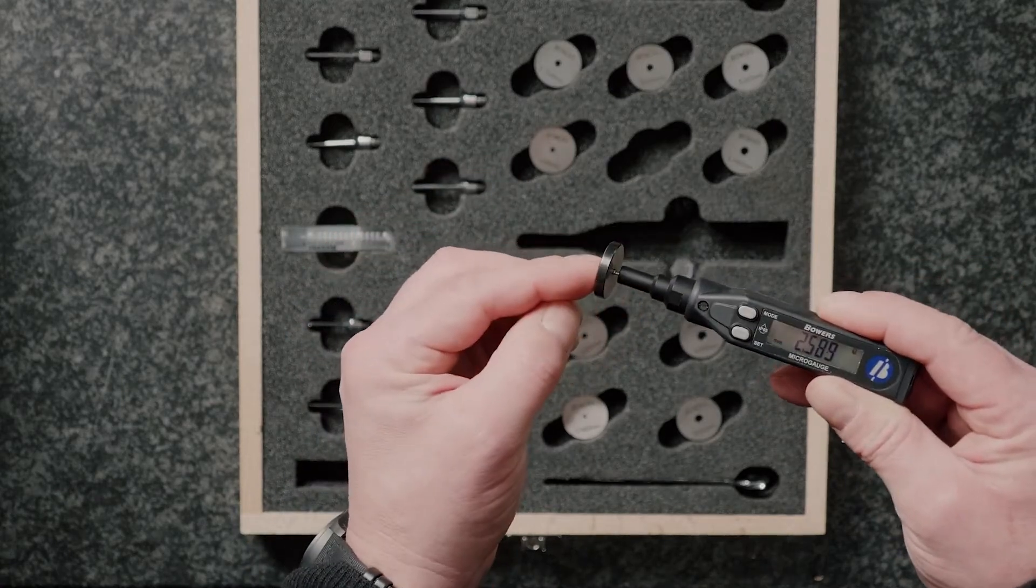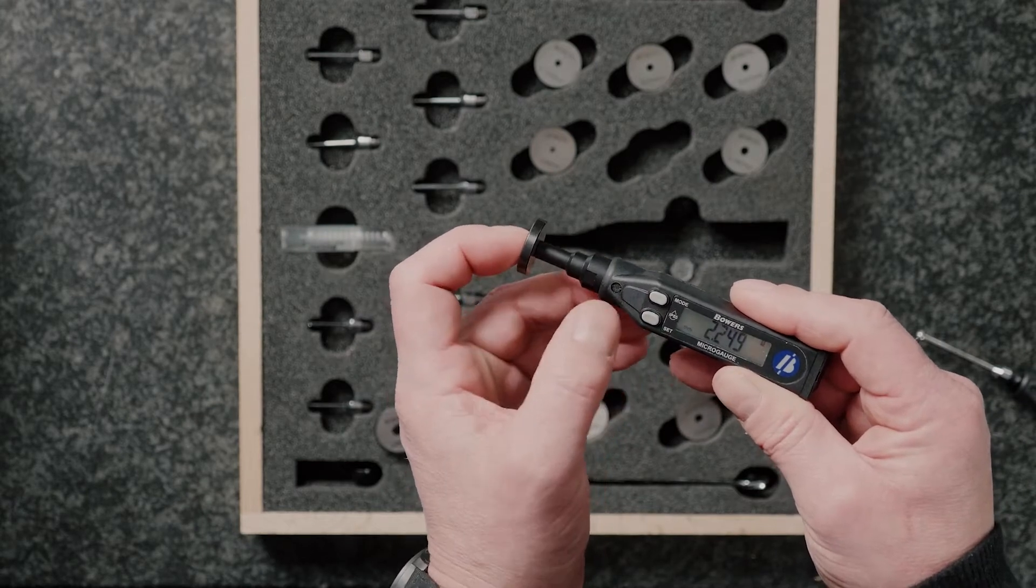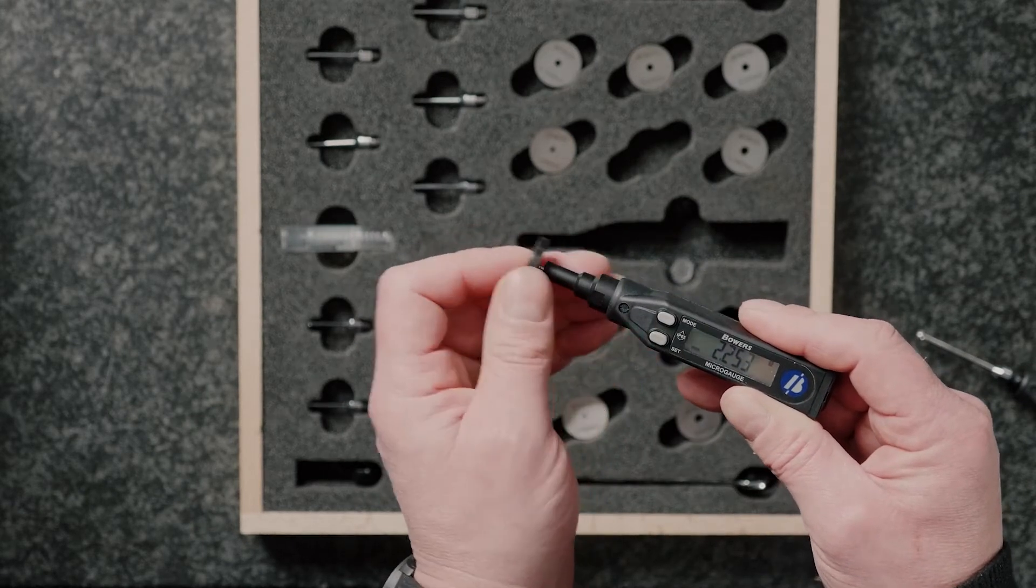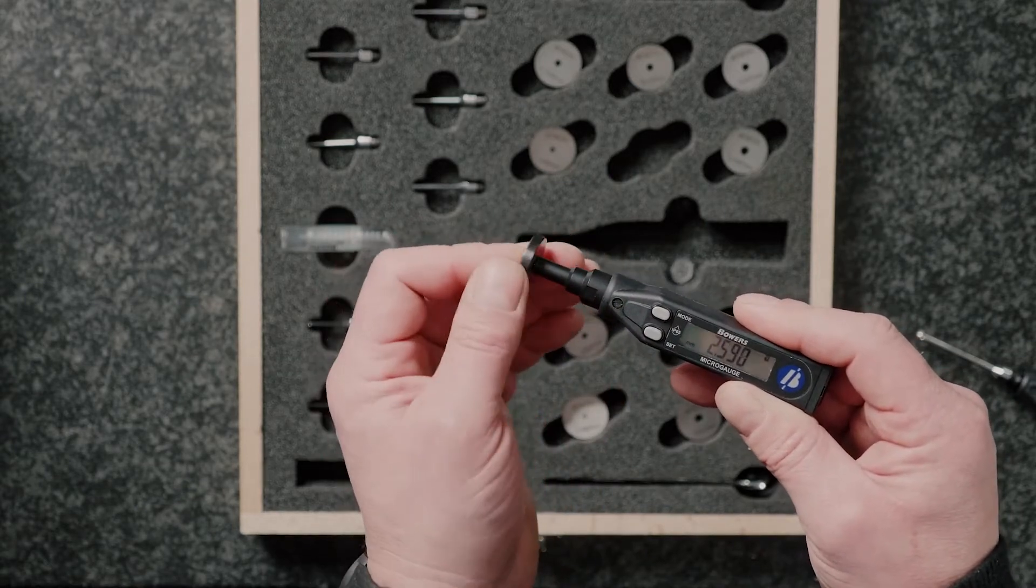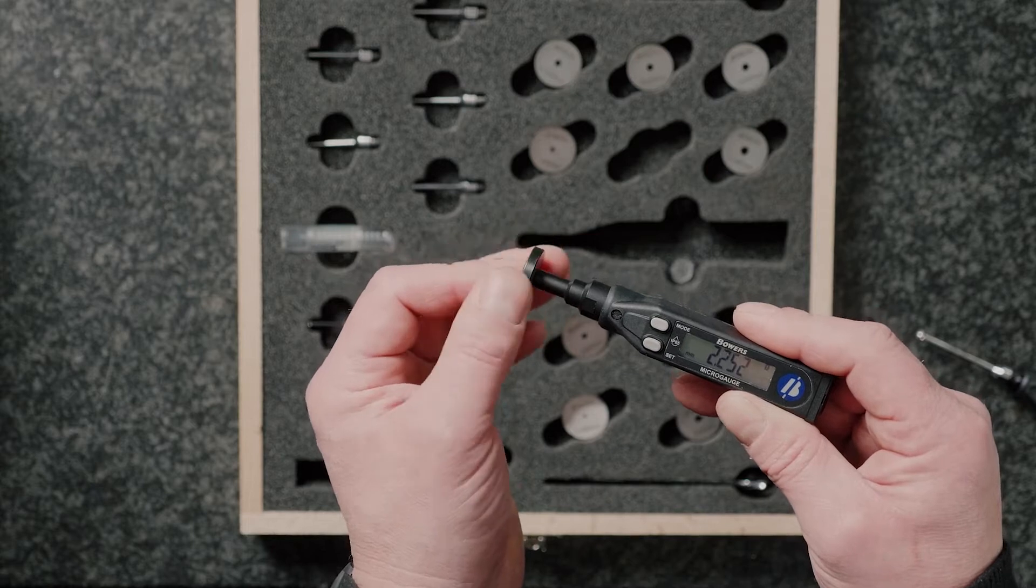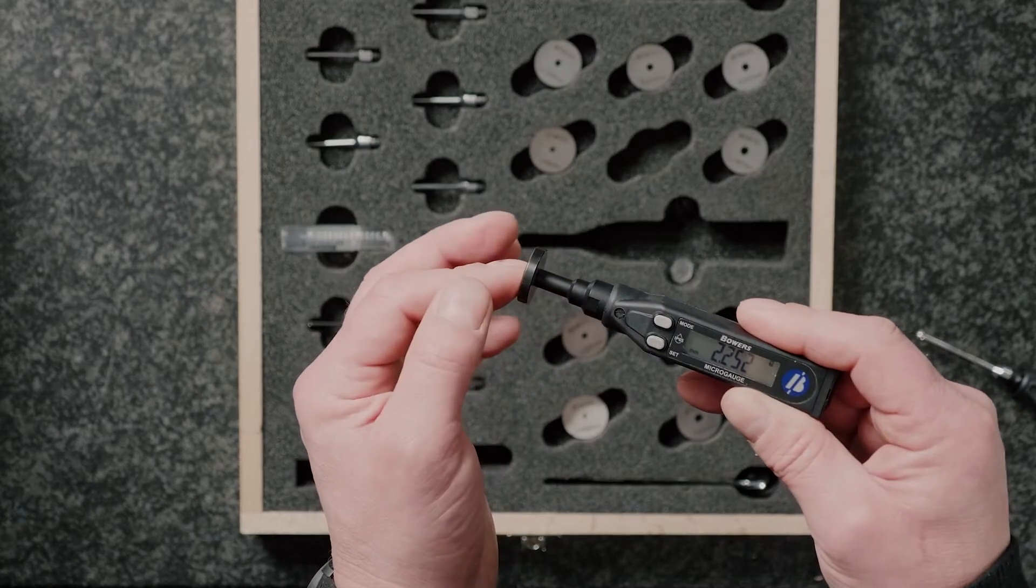I've already preset that size into the gauge's memory so I'm going to hit set and set that to 2.52. Let's do that again. There we are. And you can see we've got an incredibly repeatable measurement gauge.